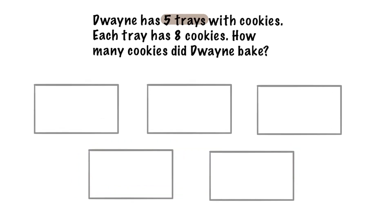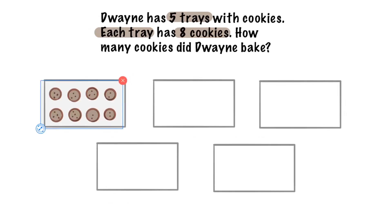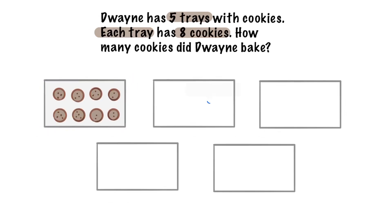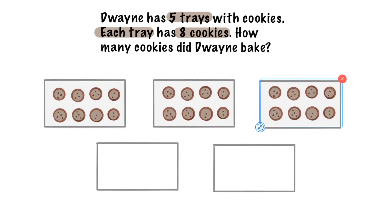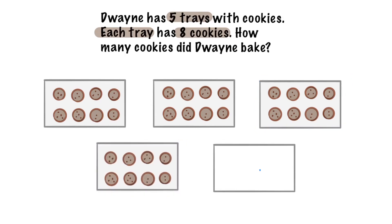Each tray has eight cookies. Each tray is important, and so is eight cookies. Let's go ahead and draw eight cookies on each tray — eight, eight, eight, eight, and eight.